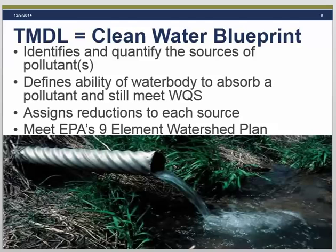For these TMDLs, we also wanted to make sure that the end product meets EPA's requirements for the nine element watershed plan. The US EPA has identified the nine minimum elements they consider critical to successful watershed plans. We want to make sure we are addressing all of the elements in these TMDLs, particularly since EPA is tying a lot of funding eligibility to having these plans in place.